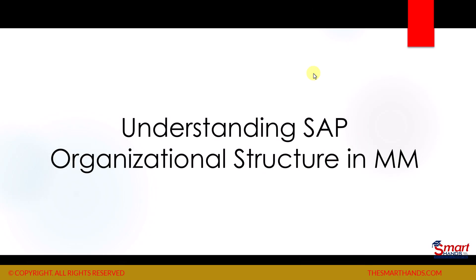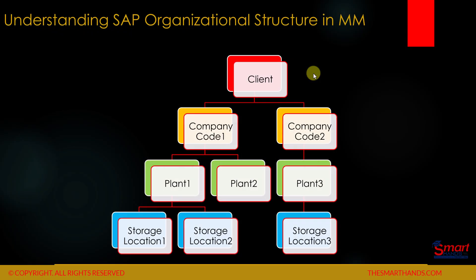Now we'll see a high-level overview of what the org structure looks like in MM. The org structure starts with a client. A client can have different company codes — one or multiple. Each company code has plants, and again there can be one or multiple plants, and each plant has storage locations. This is a very high-level overview of the org structure, and in the next videos I will show you how we can customize this org structure in the system.